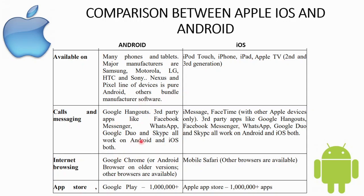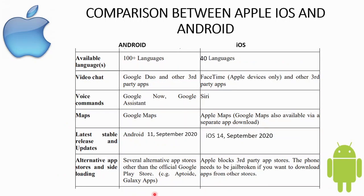For internet browsing, the default browser on Android is Google Chrome, while iOS uses Mobile Safari. Android also supports many other browser apps. iOS is available in 40 languages.